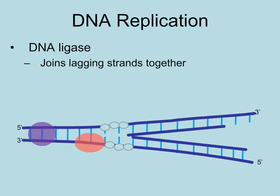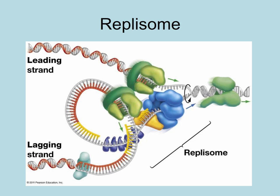This continues until the linear chromosome has been completely replicated. In reality, all those enzymes form what is called the replisome, which moves as one big unit during DNA replication. In order for this to occur, the lagging strand and its parent strand must form a loop near the replication fork so that all the enzymes of the replisome can progress in the same direction.